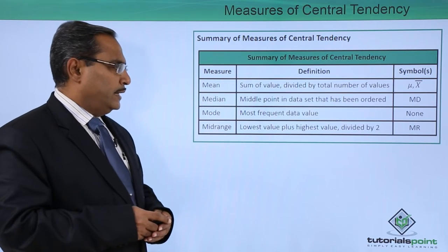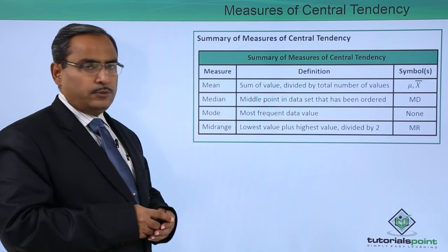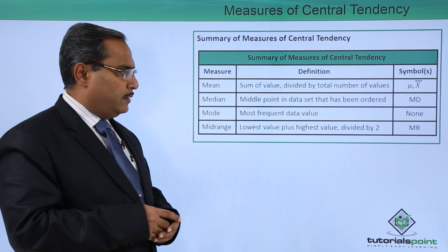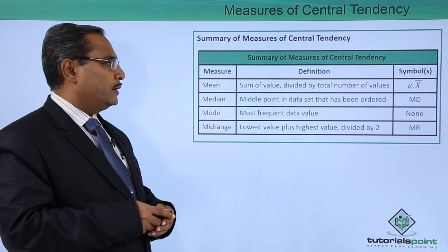In case of mid-range, that is the lowest value plus highest value within the data set divided by 2, and it will be represented by MR.